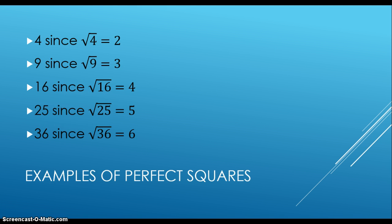Some examples of perfect squares: 4, because the square root of 4 is 2; 9, because the square root of 9 is 3; 16, because the square root of 16 is 4; 25, because the square root of 25 is 5; and 36, because the square root of 36 is equal to 6.